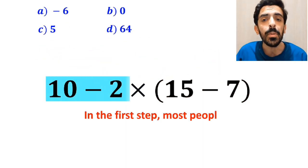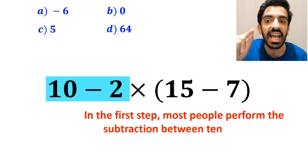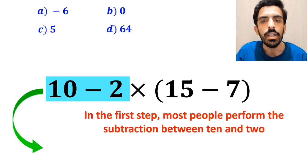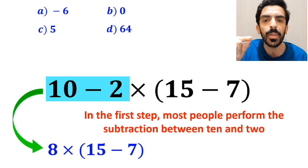In the first step, most people perform the subtraction between 10 and 2, which I have highlighted in blue. So, this expression simplifies to 8 multiplied by 15 minus 7 inside the parenthesis.